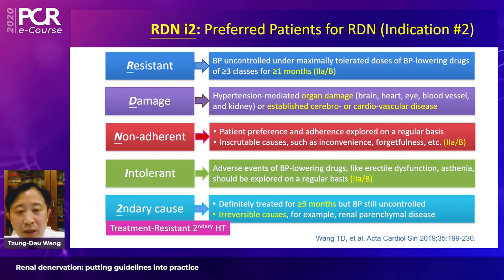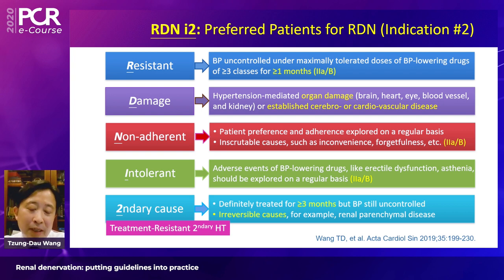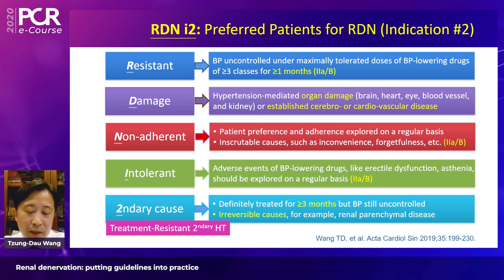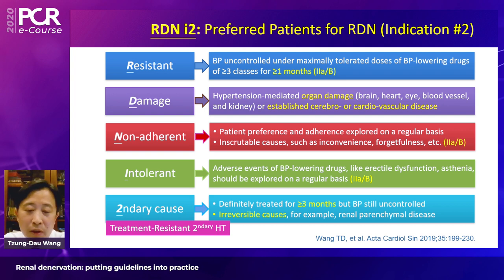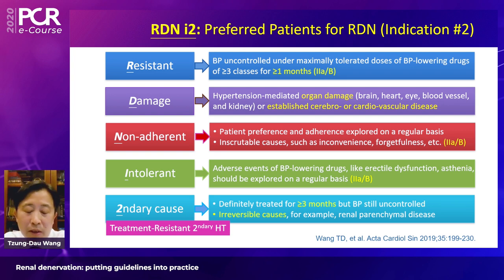Even though resistant hypertension should not be the only candidate category, patients with resistant hypertension have higher baseline blood pressure, and those with higher baseline blood pressure gain more benefit — as observed in both pharmacological trials and renal denervation studies. D stands for Damage: hypertension-mediated organ damage, long-lasting hypertension, or established atherosclerotic cardiovascular disease.